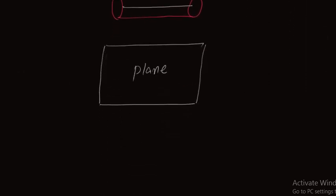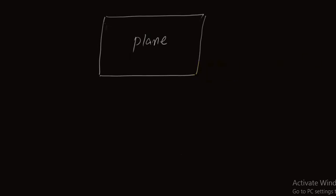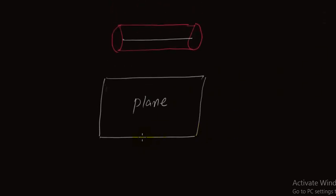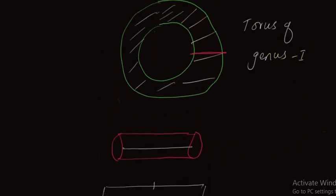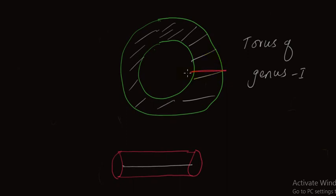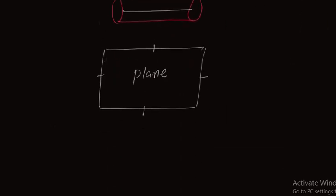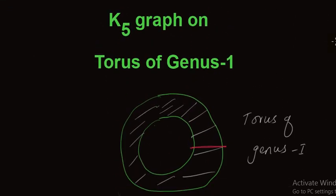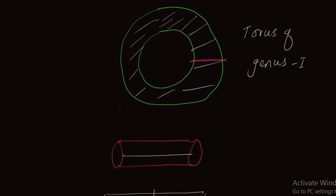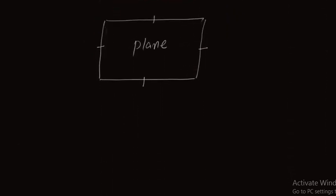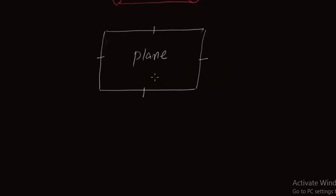Now we will draw K5 on this plane. Remember, if I join this lower edge to the upper edge and this left edge to the right edge, I will again get a surface like a torus of genus 1. So from a torus of genus 1 we can get a plane, and from a plane we can get a torus of genus 1. Now we try to sketch the K5 graph on this plane.